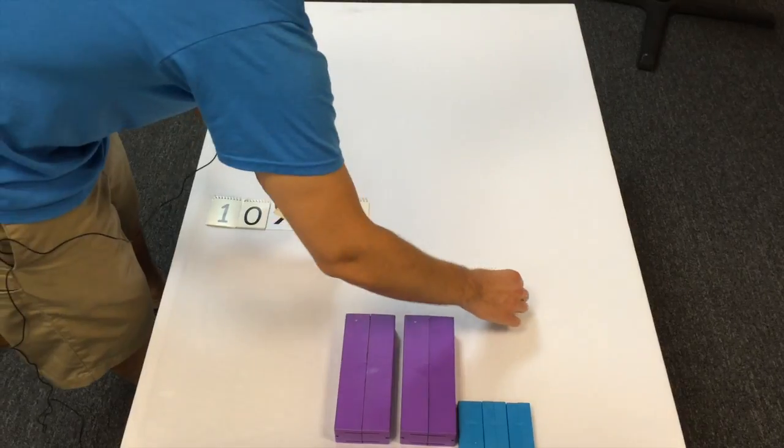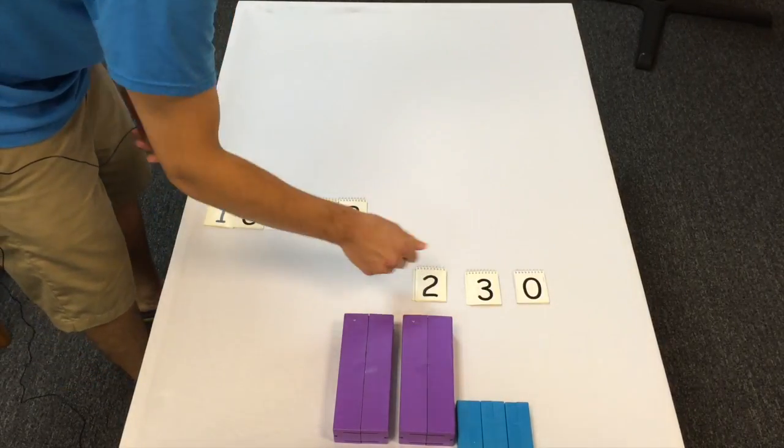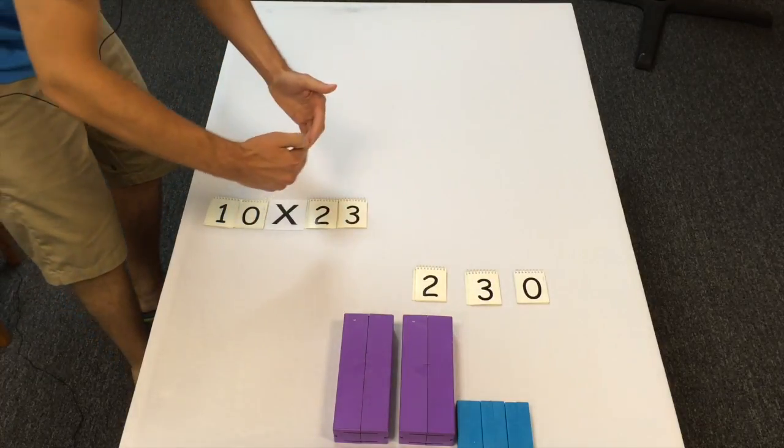So what are we left with? Three tens, that's 30, two hundreds, 230. You just add the zero, it's like shifting it over.